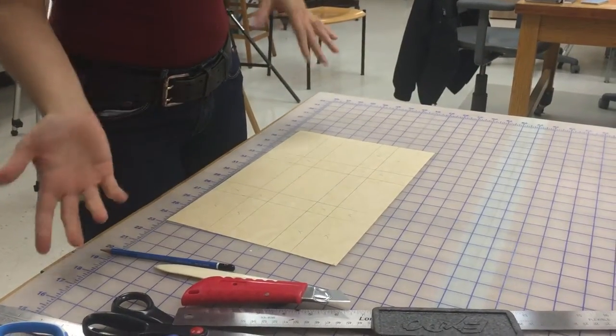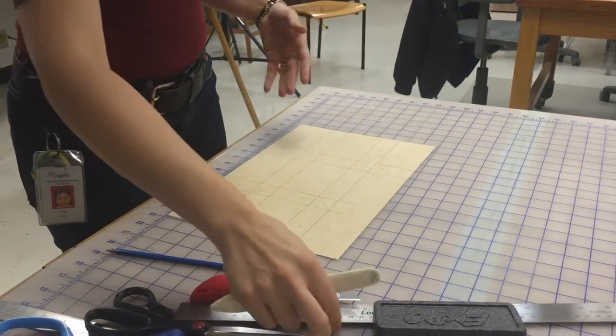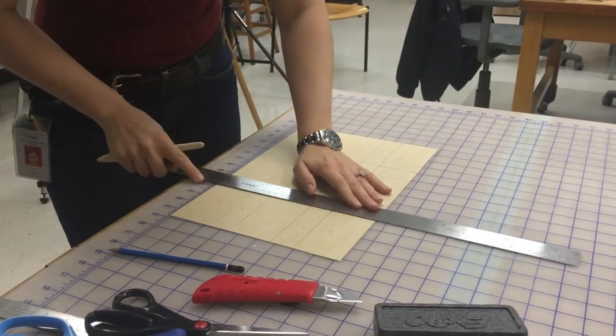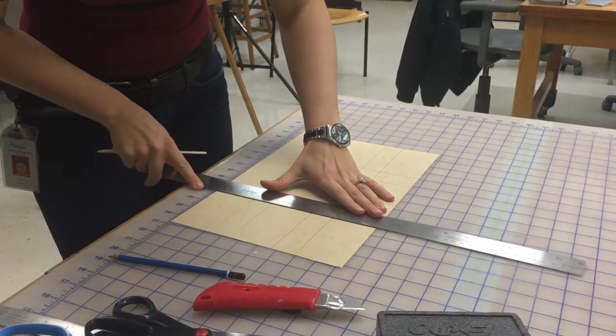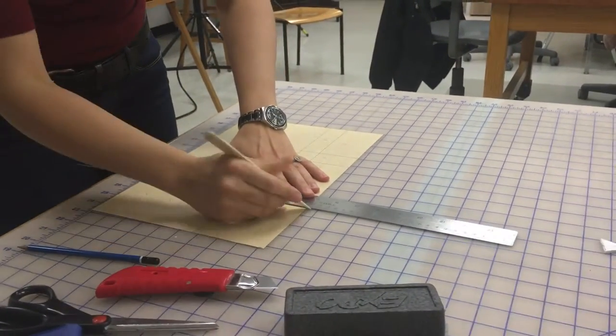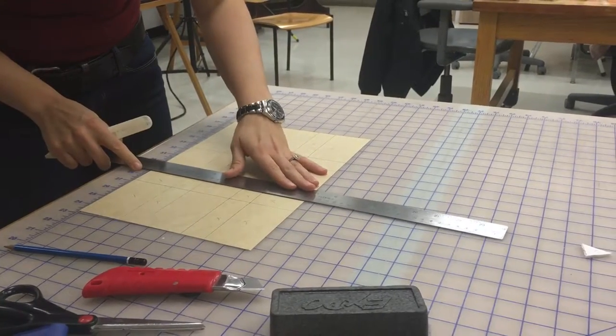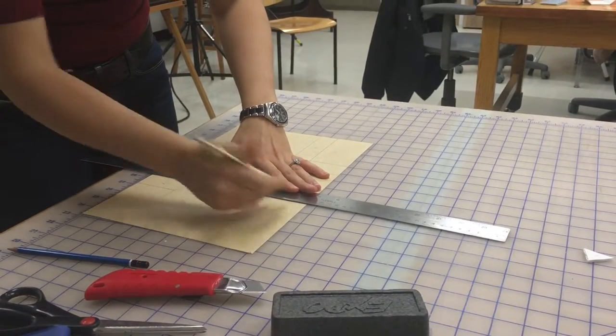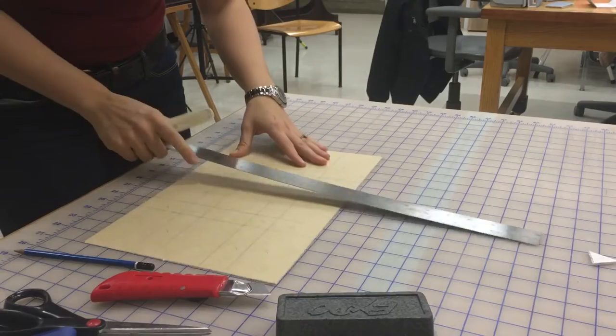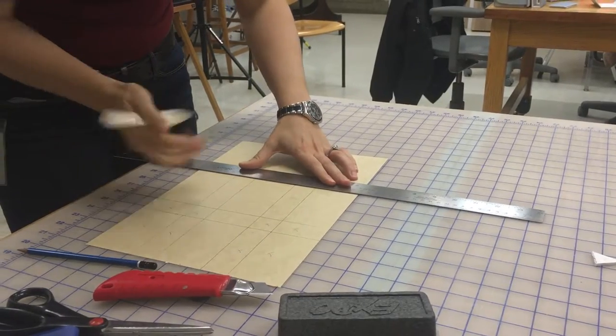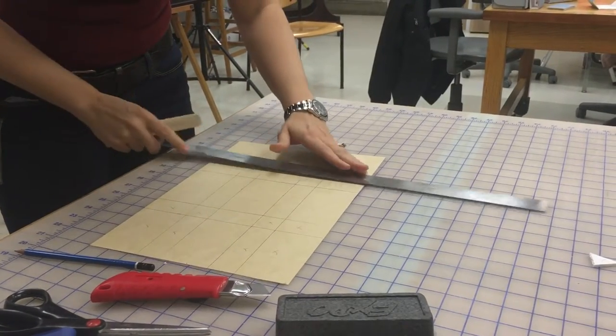Now, you can either cut first or you can score. To make life easy, I'll just score now. And again, it doesn't matter if you cut over a line that you've already scored. So, essentially, I'm just going to be scoring over all the lines. And if you just tuned in, we're using our bone folder to score the lines.